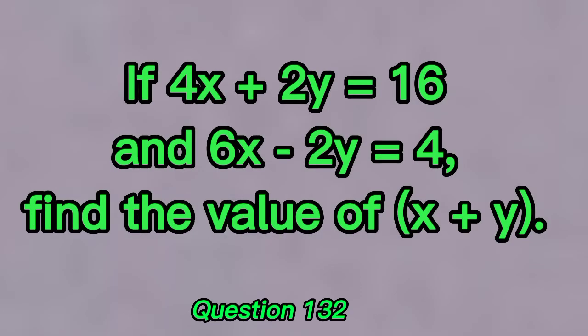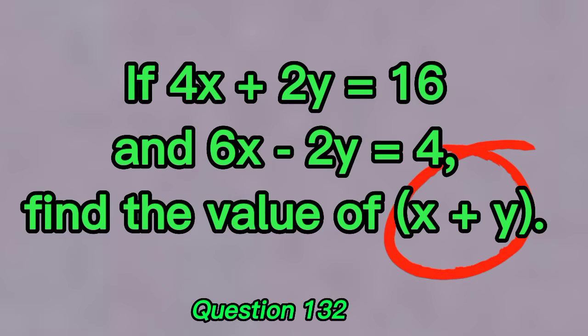If 4x plus 2y is equal to 16 and 6x minus 2y is equal to 4, find the value of x plus y. Understanding the question is part of the exam. Looking at the question, we want to find the value of x and the value of y, and when we are done we add those values. So let's solve for x and y in the given equations simultaneously, then add them to get the final result.